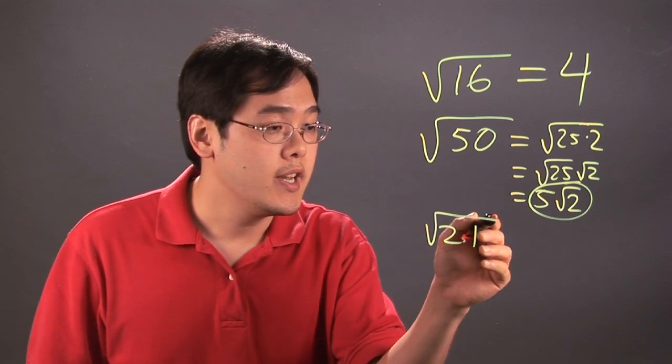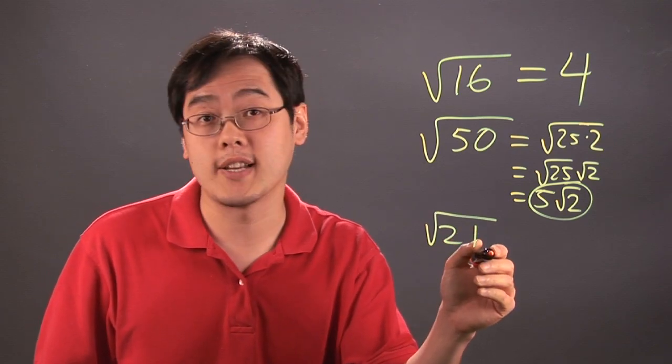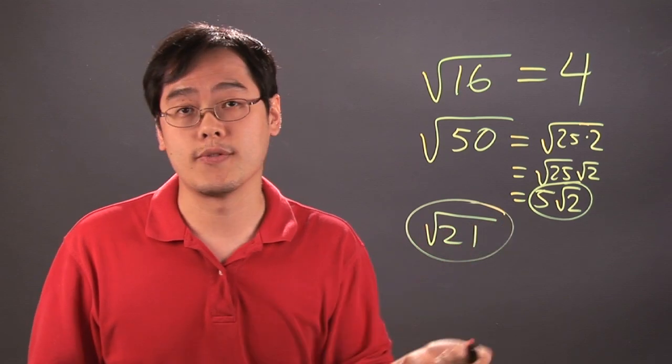Unfortunately, numbers such as these are about as good as it gets, and they're not reducible and not extractable either. So, square root of 21 is just square root of 21.